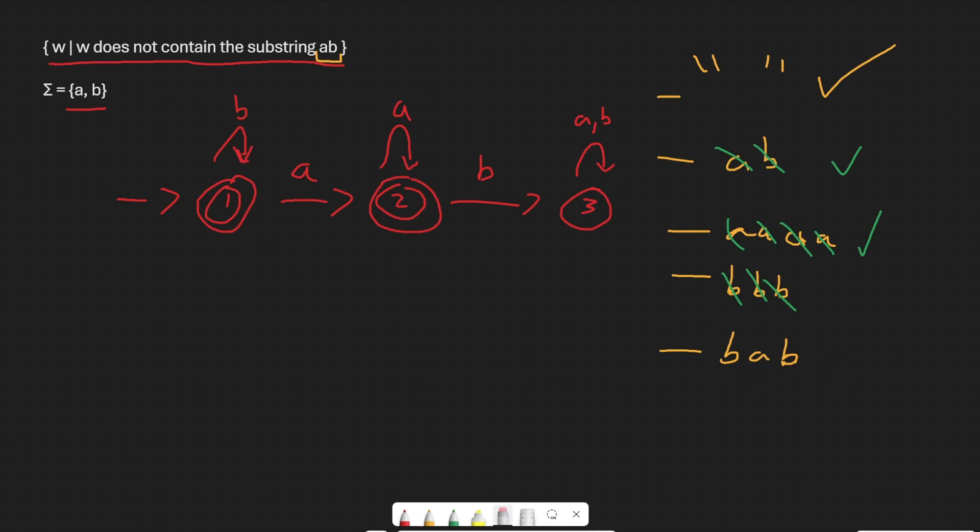Now, our last string b, a, b. So, cross off the first b, we loop on our own. We stay on state one. Then on a, we follow the arrow. We go to state two. And then on b, we follow the arrow. We go to state three. This is not an accept state. Do we have the substring ab? Yes, we do. It's right here. So, that makes sense.